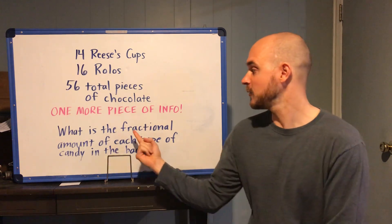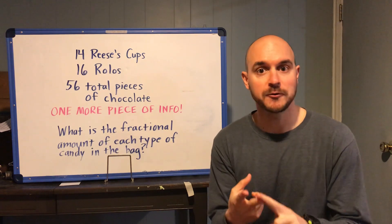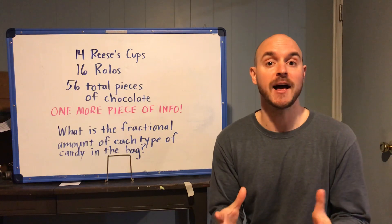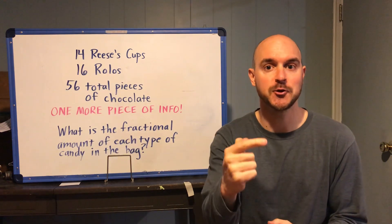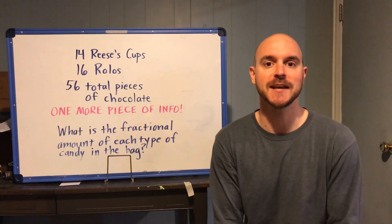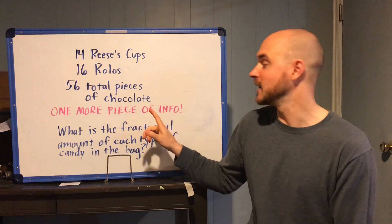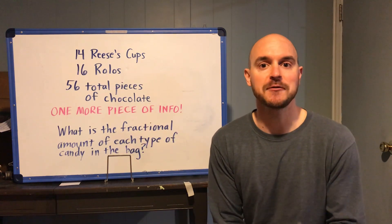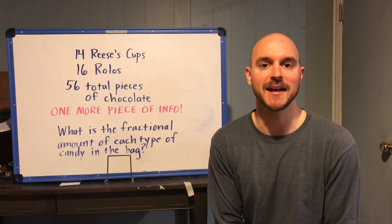One for the Hershey Kisses. What fractional amount does that represent in the bag? One for the Reese's Cups and one for the Rolos. So again you'll have three fractions. Think about those important parts numerator and denominator and what they mean and if you use what you know you'll find the last piece of information which means you can now find the exact fractional amount of each type of candy in the bag.